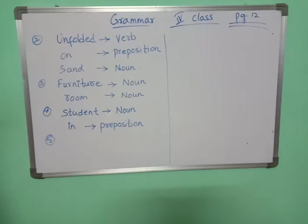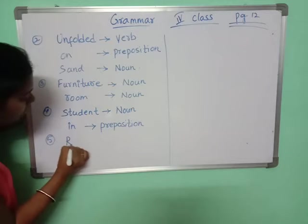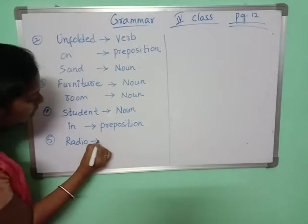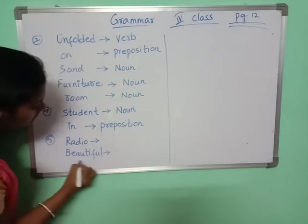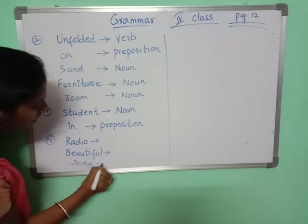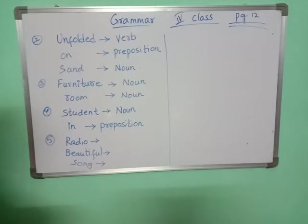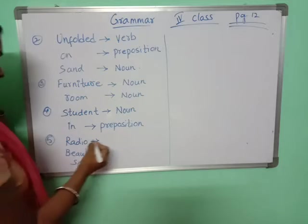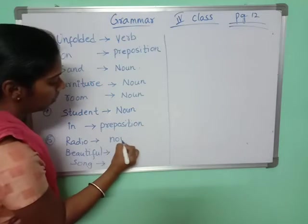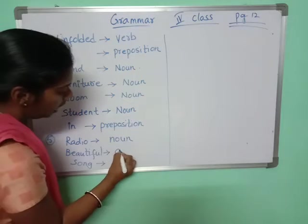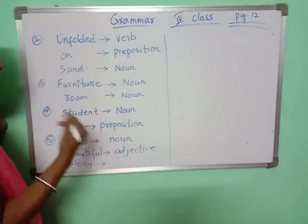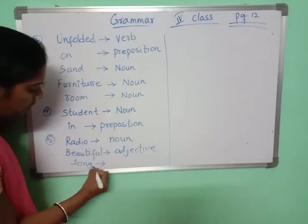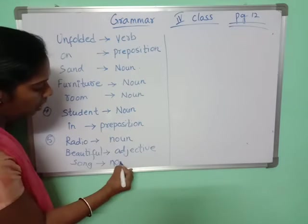Fifth one: The radio was playing a beautiful song. The underlined words are 'radio,' 'beautiful,' and 'song.' Radio is a noun. Beautiful is an adjective — it describes how the song is. And song is also a noun.